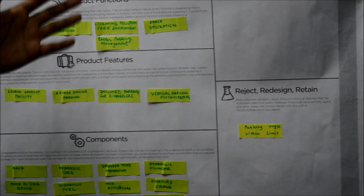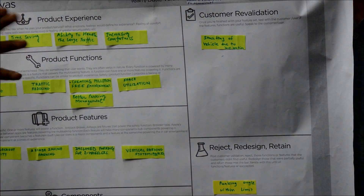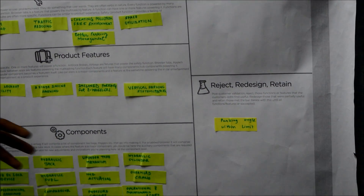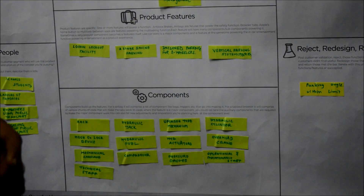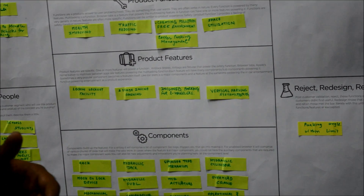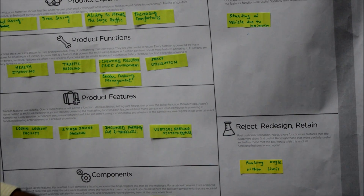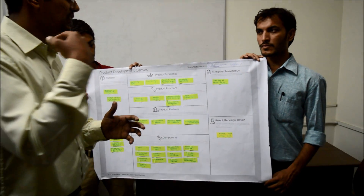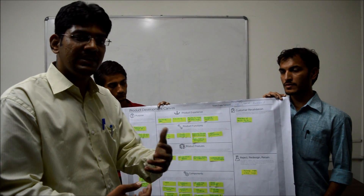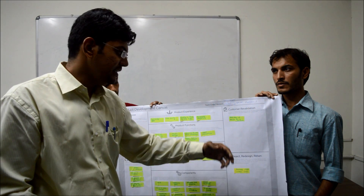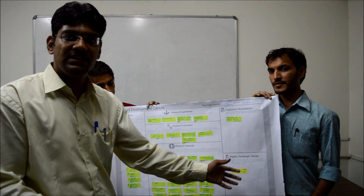From these features, the product experience is created — including fuel consumption savings and time saving. Then the product components are identified: for two-story parking, a hydraulic jack is needed; for cycle parking, hooks are used; for inclined parking, a rack and pinion mechanism is used. From this canvas, we present our features to the customer, ask if they can use the product, and if there is rejection, the process is repeated again.